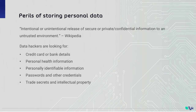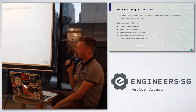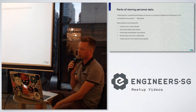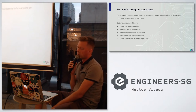Wikipedia defines a data breach as an intentional or unintentional release of secure or private/confidential information to an untrusted environment. Another good way of describing it is as a security incident in which sensitive, protected or confidential data is copied, transmitted, viewed, stolen or used by an individual unauthorised to do so. This can include data such as credit card or bank details, personal health information, personally identifiable information, passwords and other credentials — which are especially valuable when combined with email addresses, given that a lot of people reuse credentials across sites — and also trade secrets and intellectual property.